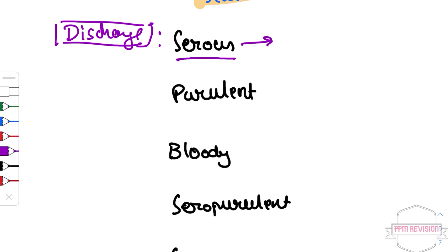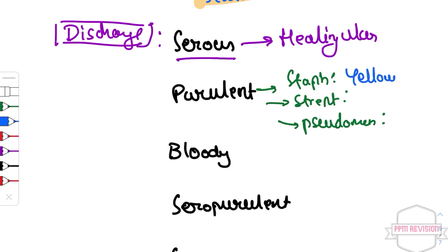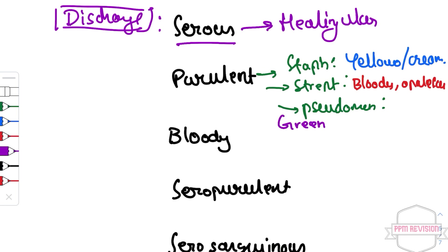Serous discharge is seen in healing ulcers. Purulent discharge is seen in staphylococcus, streptococcus, and pseudomonas infections. Staphylococcus produces yellow and cream-colored discharge. Streptococcus is bloody and opalescent. Pseudomonas produces greenish discharge due to the presence of pseudocyanin.